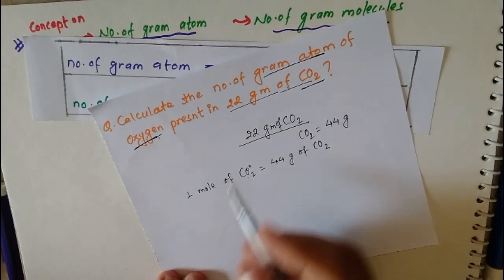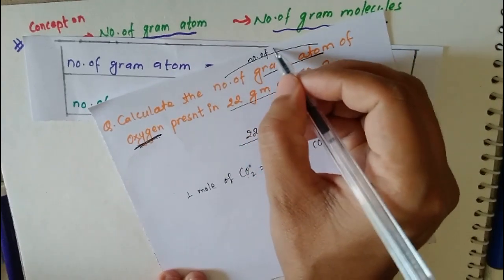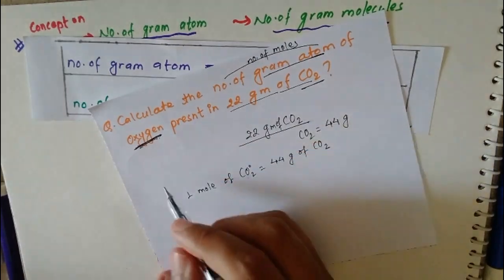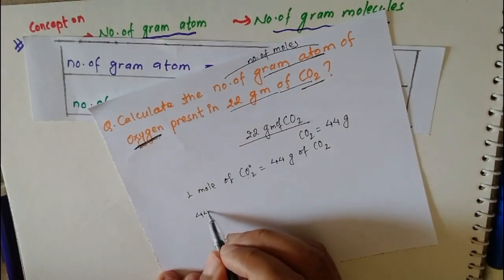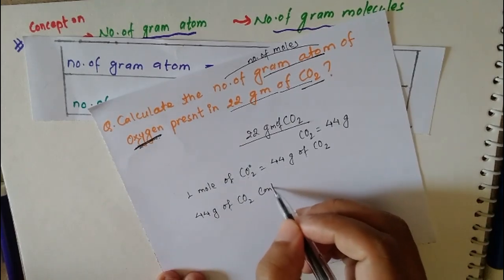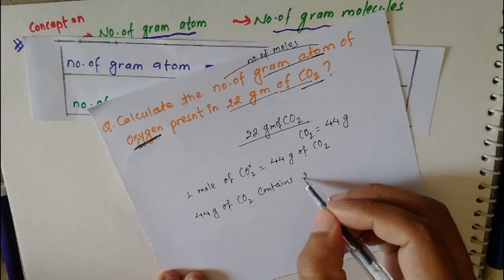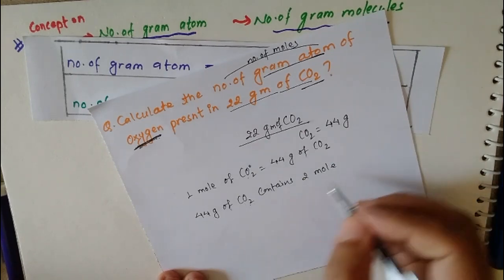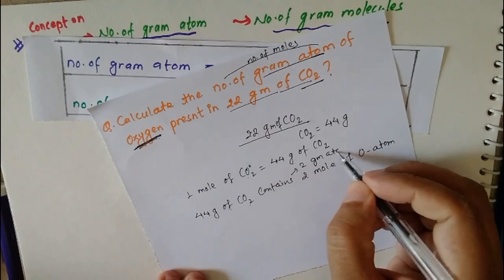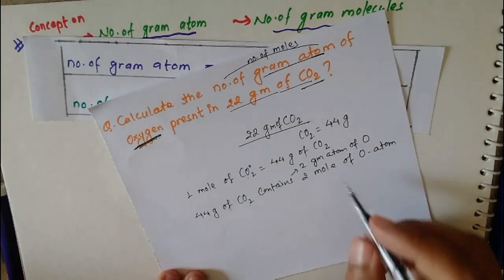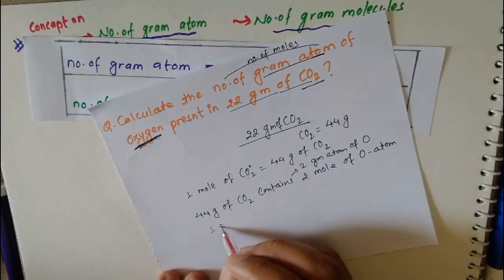In 1 mole of CO2, how many gram atoms of oxygen are present? Gram atoms means number of moles. In 44 grams of CO2, how many oxygen atoms are there? CO2 contains 2 oxygen atoms, so 44 grams of CO2 contains 2 moles of oxygen atom, or we can say 2 gram atoms of oxygen.